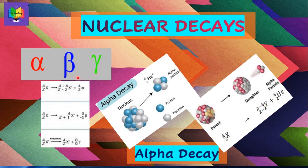A positron is the name for the antiparticle of the electron. Antimatter is composed of antiparticles. Both alpha and beta decays change the original nucleus into a nucleus of a different element. In gamma decay, the nucleus lowers its internal energy by emitting a photon, a gamma ray. This decay does not modify the chemical properties of the atom.